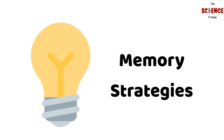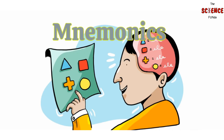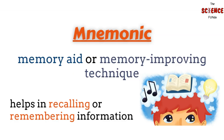Memory strategies can be helpful when it's hard to remember big lists of words. The use of mnemonics is one of the strategies for making it much simpler and easier to recall complicated topics or sequences. But what are mnemonic devices and how can they aid with remembrance? A mnemonic is a memory aid or memory-improving technique that helps us to organize, retain, and remember information by making recall easy.